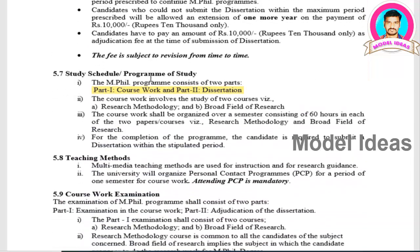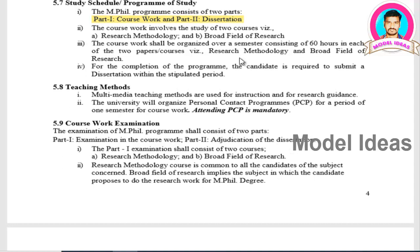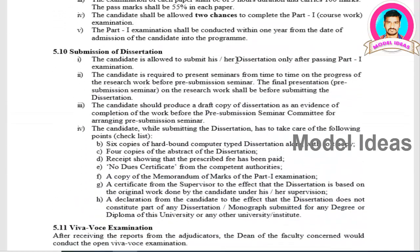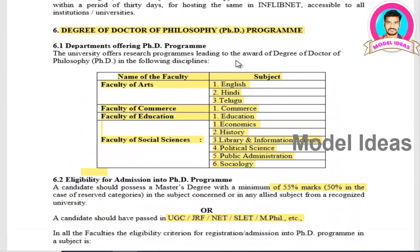For MPhil, the research methodology is divided into two parts: Part 1 is the coursework and Part 2 is the dissertation. When you submit the dissertation, you will be called for a VIVA examination. If you qualify in the VIVA examination, you will be awarded your MPhil degree.